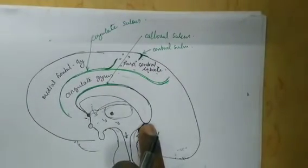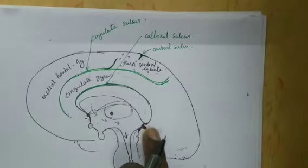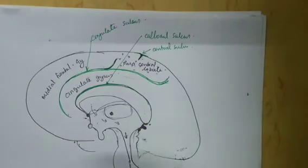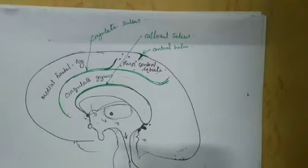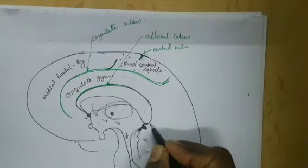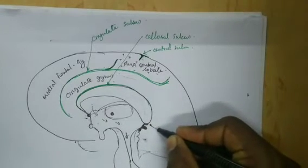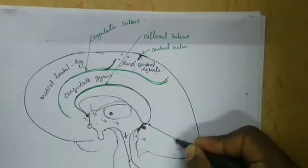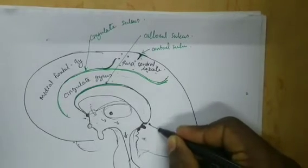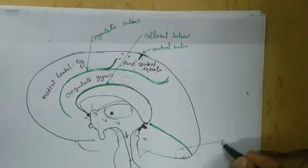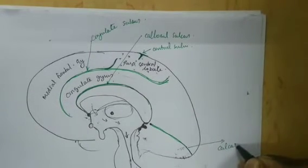The posterior part has two prominent sulci. One, starting just after a little space from the end of the splenium, is a prominent sulcus going towards the occipital pole, and this sulcus is called the calcarine sulcus.